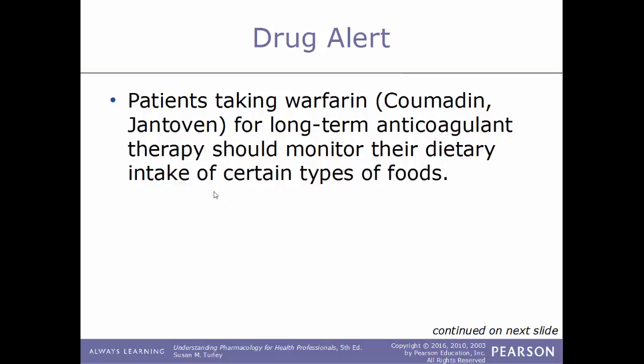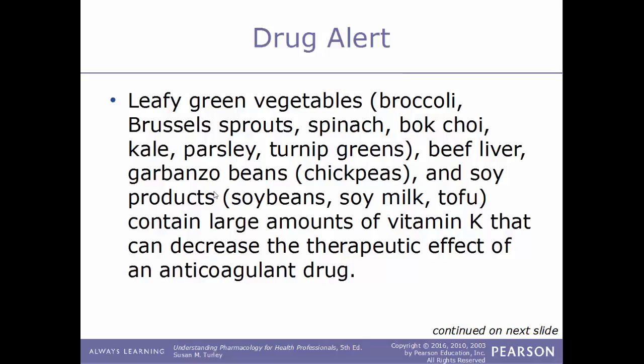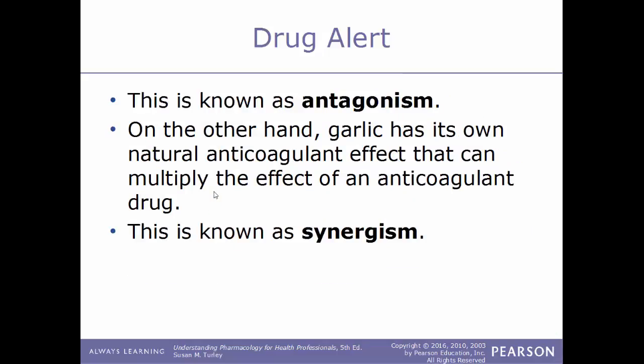Drug alert: patients taking warfarin (Coumadin or Jantoven) for long-term anticoagulant therapy should monitor their dietary intake of certain foods. Leafy green vegetables like broccoli, Brussels sprouts, spinach, bok choy, kale, parsley, turnip greens, as well as beef liver, chickpeas, and soy products contain large amounts of vitamin K that can decrease the therapeutic effect of the anticoagulant drug. Since warfarin works by blocking vitamin K, a high vitamin K diet will negate the drug's effect — this is called antagonism. On the other hand, garlic has its own natural anticoagulant effect that can multiply the effect of an anticoagulant drug, called synergism.